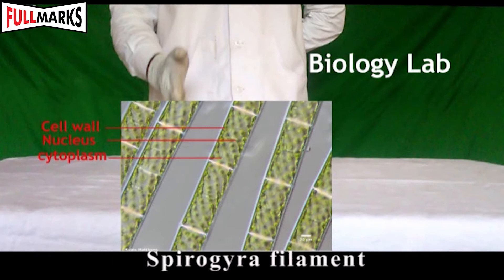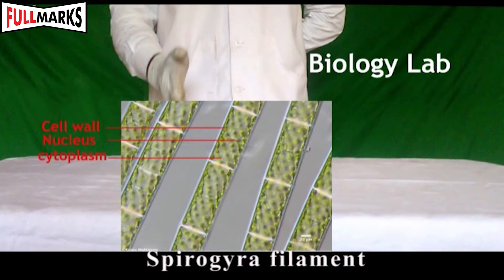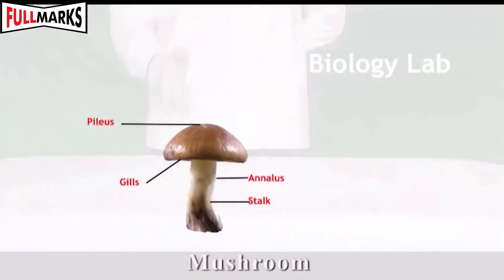1. Spirogyra. Characteristics of Spirogyra: It is a single-cell-thick, cylindrical filament, slimy to touch, green-colored algae. It grows very fast in water. The filament has cells joined end to end. It has spiral-shaped, ribbon-like chloroplast, hence it is named Spirogyra. Each cell is rectangular with the nucleus in the center. Cell wall is clearly seen. Chlorophyll is present in the chloroplast and helps in photosynthesis.